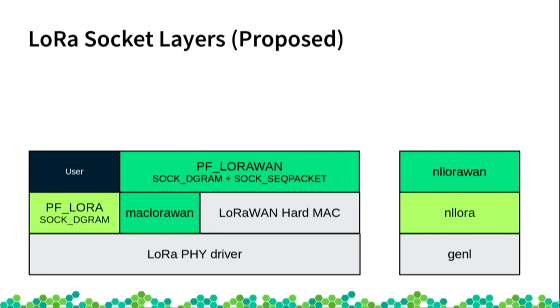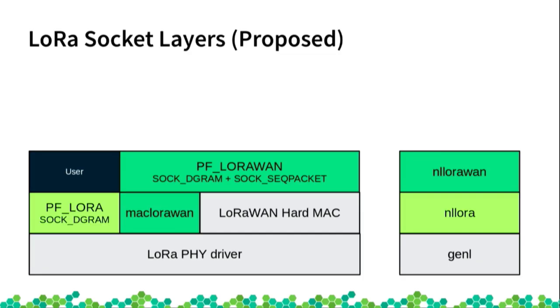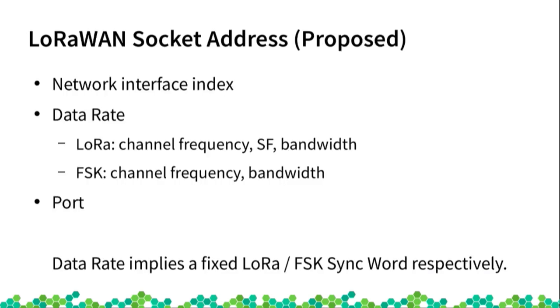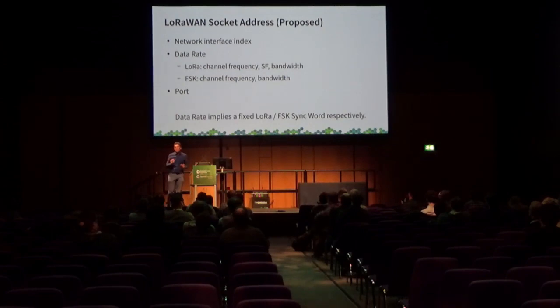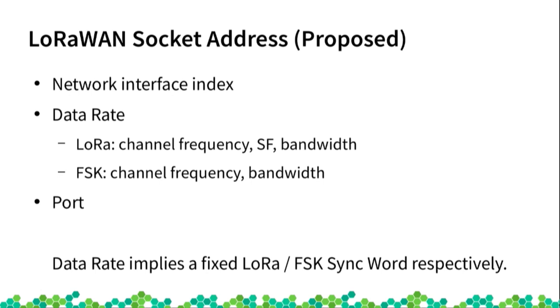For LoRaWAN we would also need netlink to configure and interact with the layer below. There are two approaches: if using a module with an MCU, we could reuse the hard MAC if implemented by the vendor; or if we want everything in Linux, we need a module that translates LoRaWAN packets down into the LoRa format, adding needed headers. LoRaWAN is a framing protocol with addressing modes, join operations for exchanging credentials with gateways, and defines so-called data rates — a meta description of channel protocol combinations.